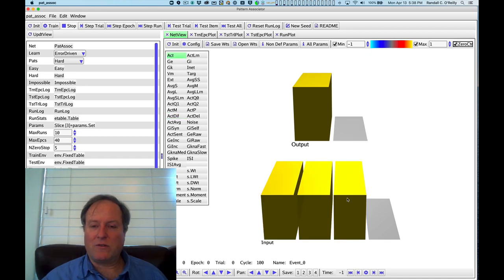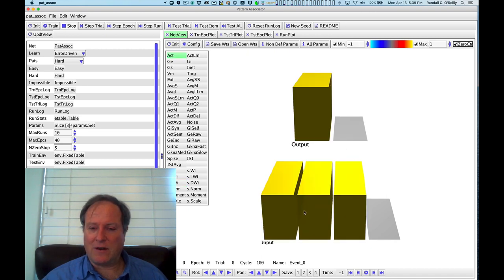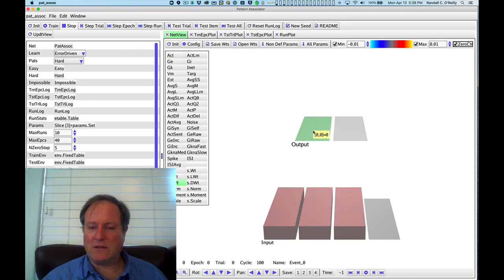We can look at how the error-driven learning mechanism actually updates the synaptic weights. Let's click on the D weight value for this neuron. Recall that this one was not active on its own but should have been active according to the target value. We can see that the weights have been increased from the sending active units in the input for that particular receiving unit. This one should be active but wasn't, therefore we increase its synaptic weights to make it more likely to be active next time.